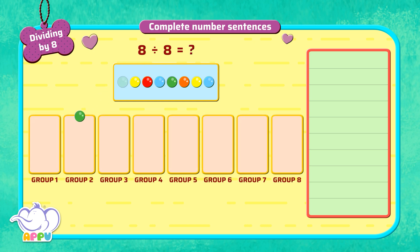So when we divide 8 beads equally into 8 groups, we get 1 bead in each group. So the answer is 1.